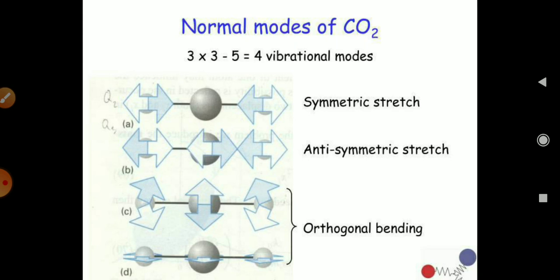In symmetric stretching, both oxygen atoms are moving in a symmetrical way. In the second mode — anti-symmetric or asymmetric stretching — the two oxygens of CO2 stretch in the same direction while one is in the positive direction, giving asymmetric stretching. In the third and fourth modes, both oxygens move in the same bending direction while the carbon moves in the opposite direction — this is orthogonal bending, occurring in both the horizontal and vertical planes.